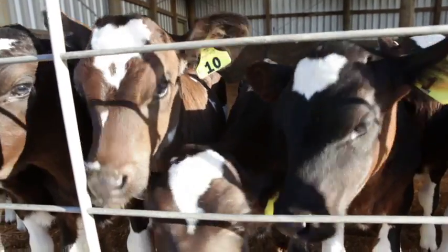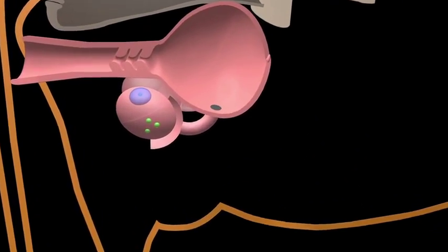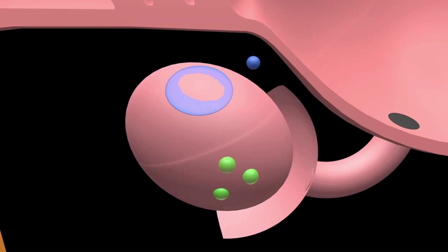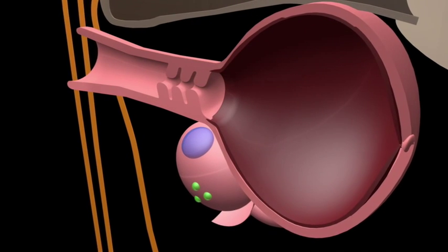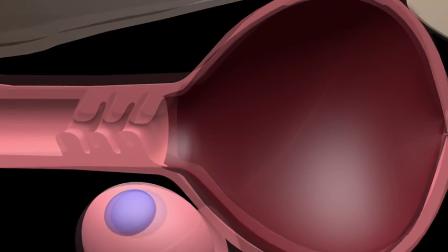The structure in the body that produces each of the hormones is well known. The corpus luteum produces progesterone and the follicle produces estrogen. These are the two key structures on the ovary and the two key hormones from the ovary. If the cow does not become pregnant the non-pregnant uterus secretes prostaglandin to kill the corpus luteum.